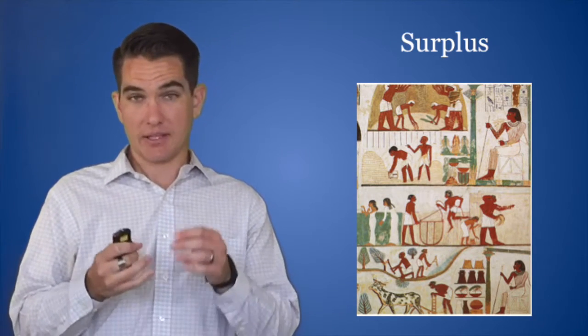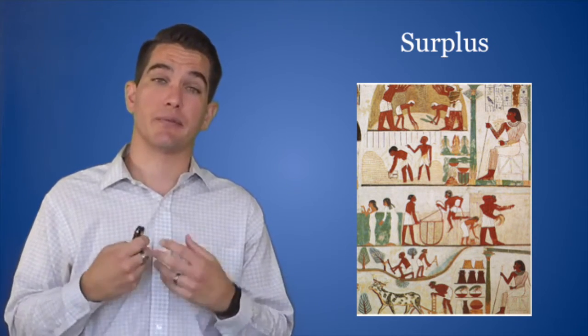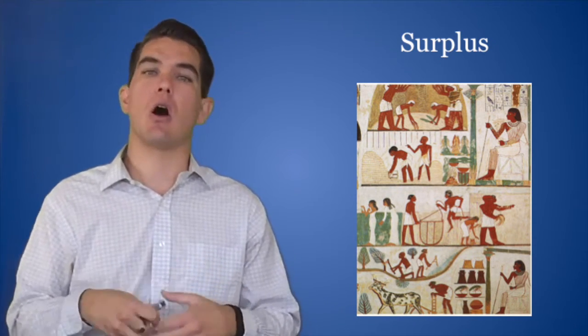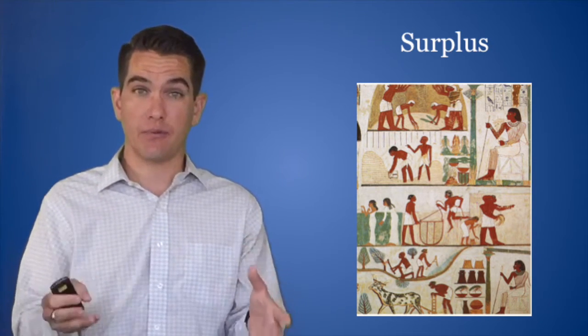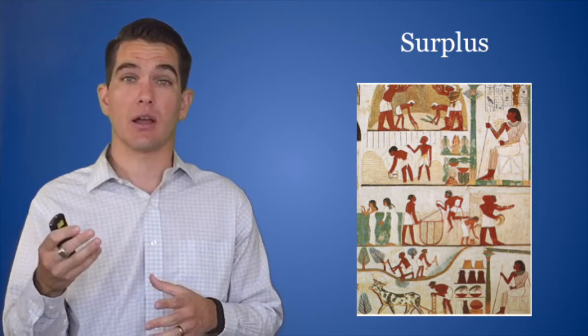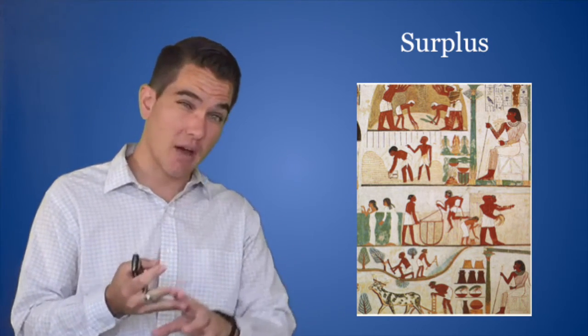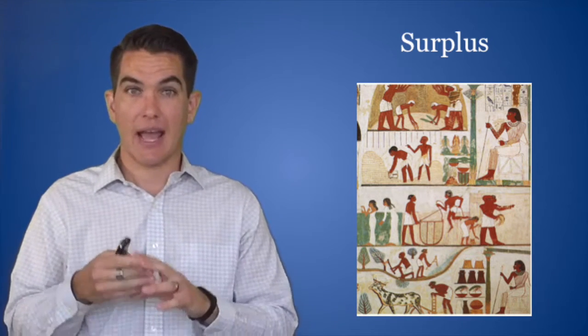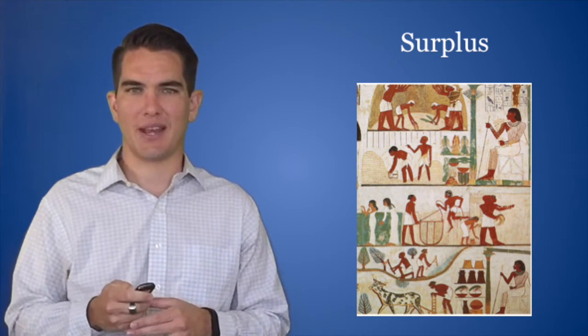First big idea here. The domestication of plants and animals gives us a surplus of food. And when you have a surplus, all sorts of things are going to happen. It means not everybody in society has to work on gathering food. There's surplus. There's extra. So you're going to be able to feed priests and warriors and governors and artisans. And people are going to be able to specialize in labor besides worrying about how they're going to get food for the day.